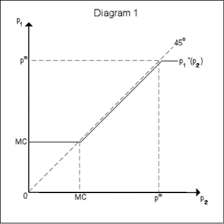Diagram 1 shows Firm 1's reaction function P1, with each firm's strategy on each axis. It shows that when P2 is less than marginal cost, Firm 1 prices at marginal cost, P1 equals MC.